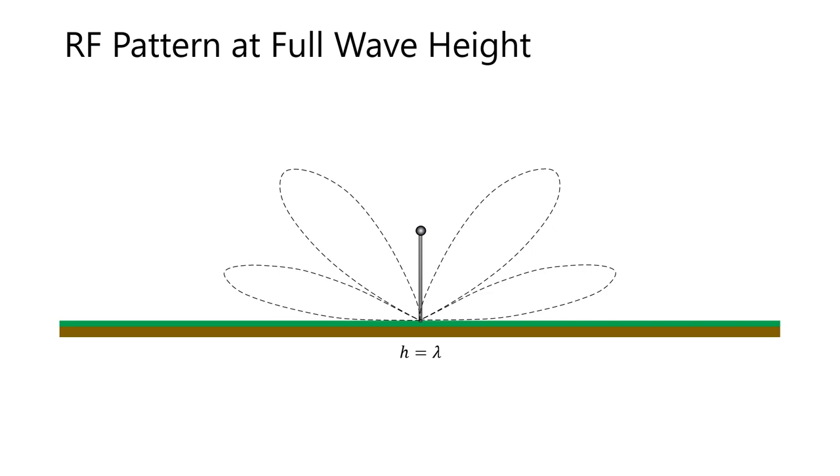In summary, as we raise the antenna, we develop more lobes that are narrower. Also, raising the antenna lowers the nulls. Conversely, lowering the antenna raises those nulls. These principles apply to glide slope RF pattern development and how the proper glide path angle is achieved.